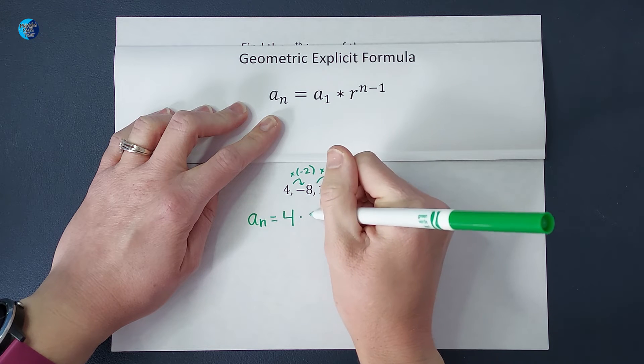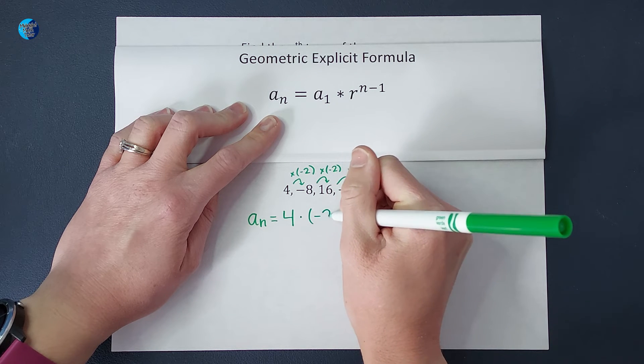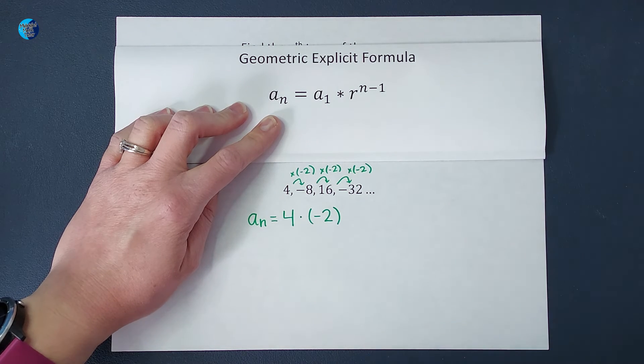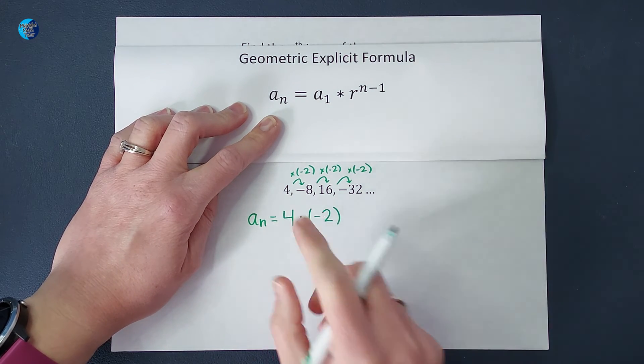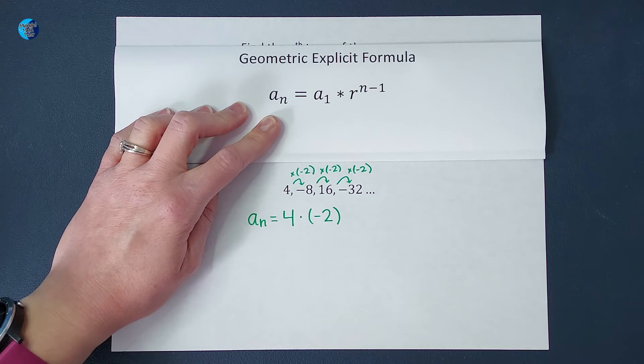So multiplied by negative 2, but not just once, right? If I multiply it once, that gives me this guy. But I want it for anyone I want.